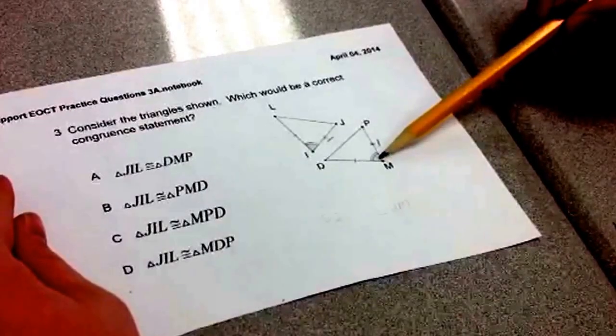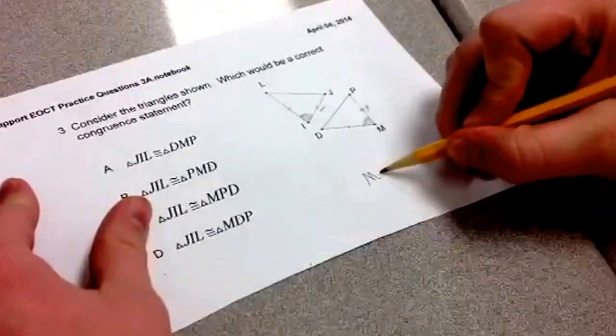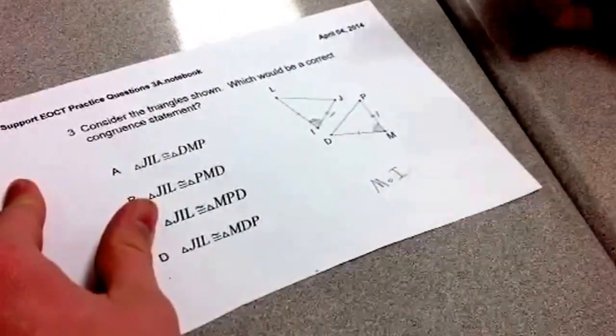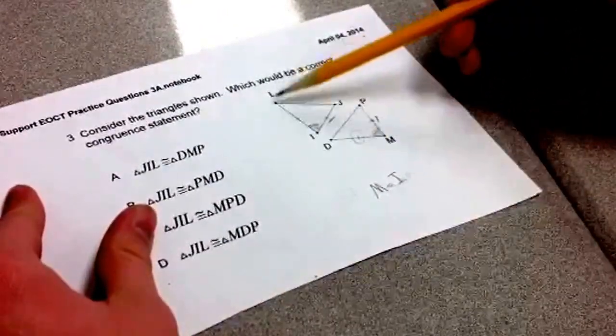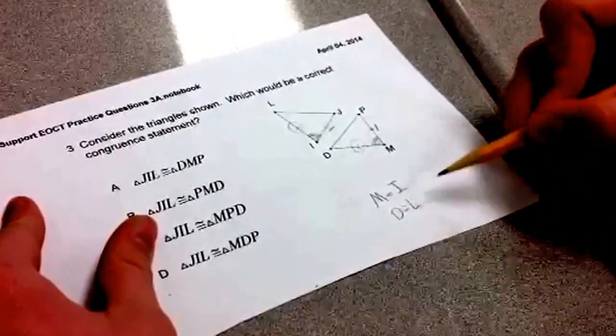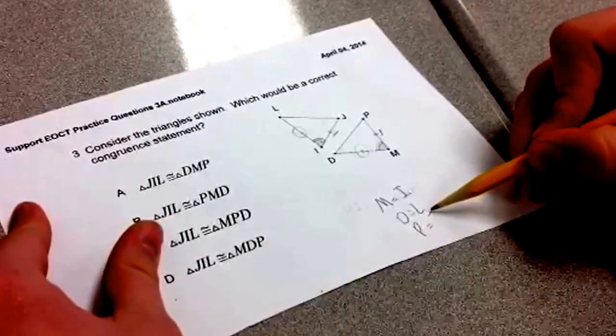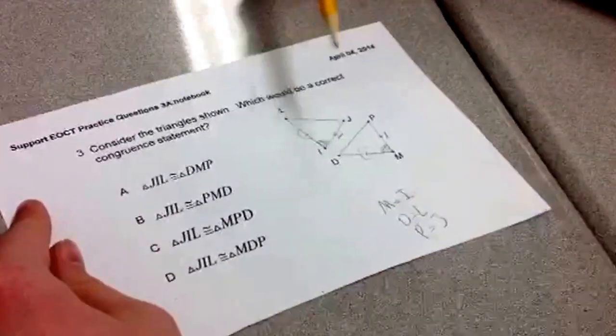The shaded area means that they're congruent. So M and I are congruent. The line indicates that these are the same. So D and L will be congruent. And P and J will be congruent.